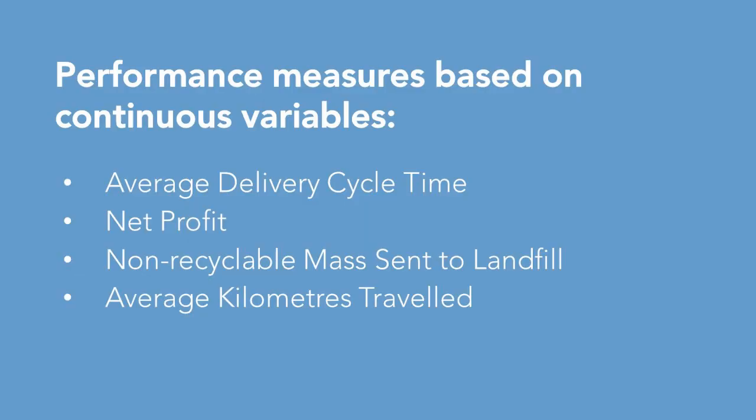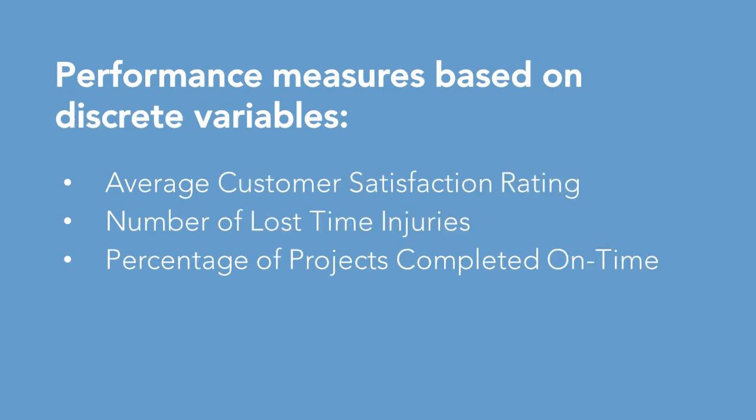Performance measures can be based on either continuous or discrete variables. Measures such as average delivery cycle time, net profit, non-recyclable mass sent to landfill, and average kilometres travelled are all based on continuous variables. Measures such as average customer satisfaction rating, number of lost time injuries, and percentage of projects completed on time are based on discrete variables.